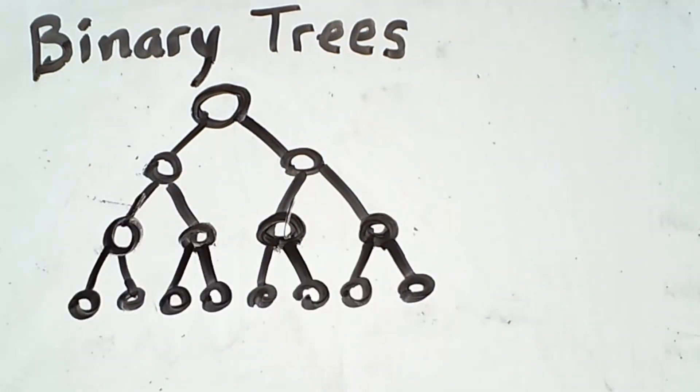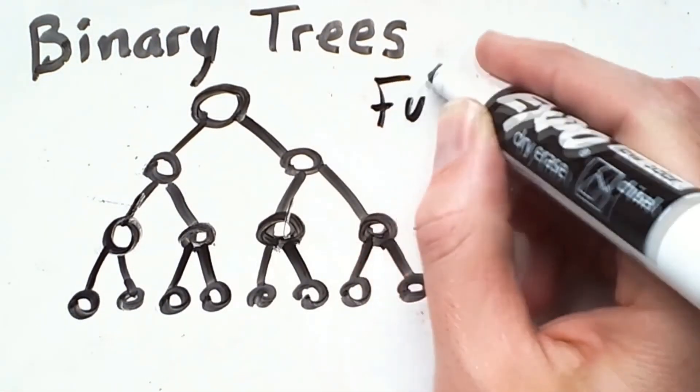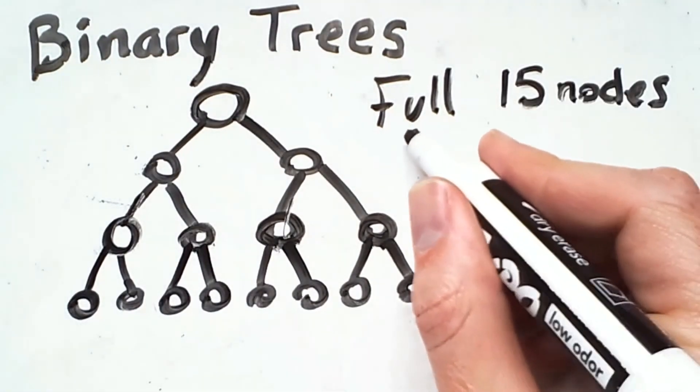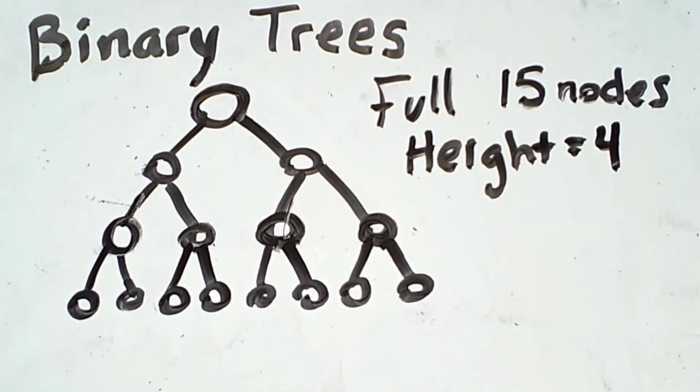One more interesting fact I'll point out that is true of complete trees, and therefore also of full trees, is that you can determine the height of these trees based on the number of nodes contained in the tree. This is a full tree that contains 15 nodes. We know that the height is 4. But there's a formula for this. Because the height will only increase every time we double the number of nodes, the formula for the height is based on the log of the number of nodes, which we'll call n.